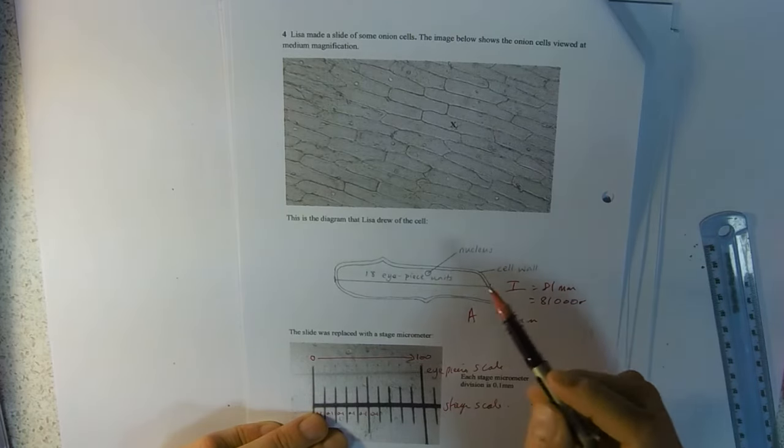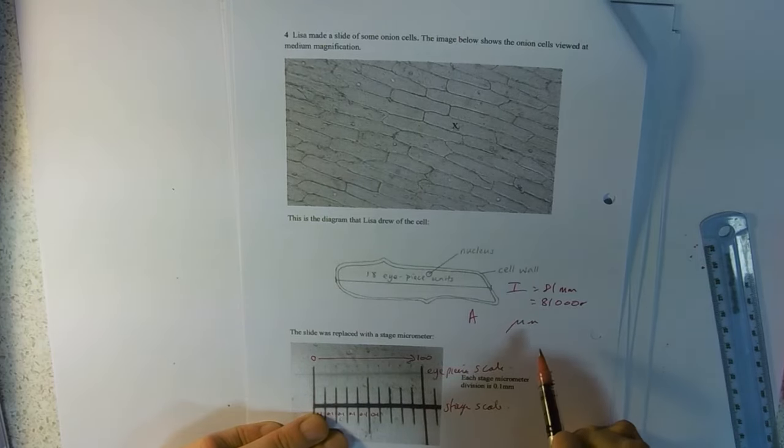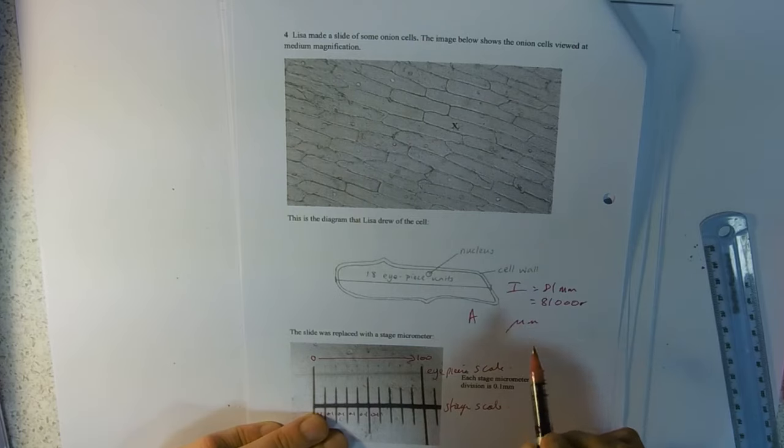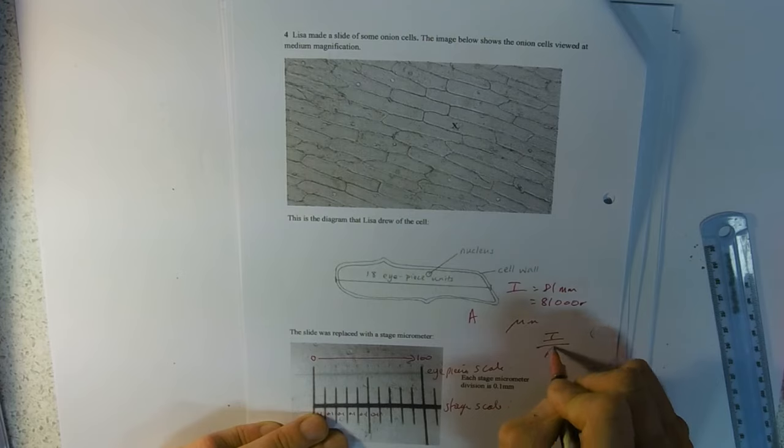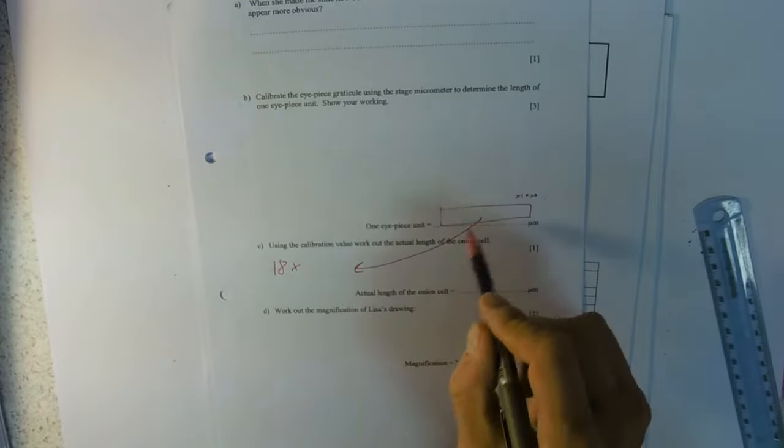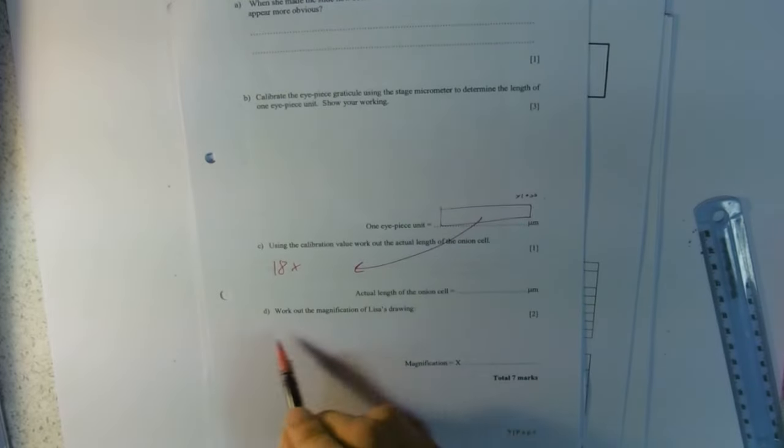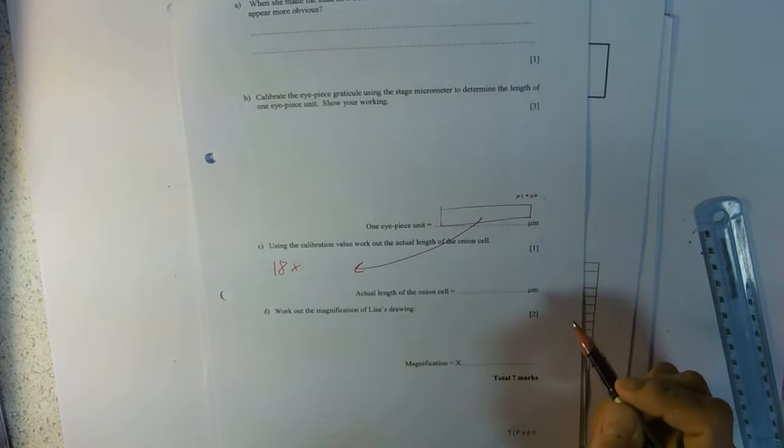So probably best we need these in the same unit, so 81,000 there. And the magnification is how many of those fit into our 81,000, so it'll be image divided by the actual. And again, if you've mucked up earlier, it's still worth having a go at this because your error might be carried forward and you might still get the marks.